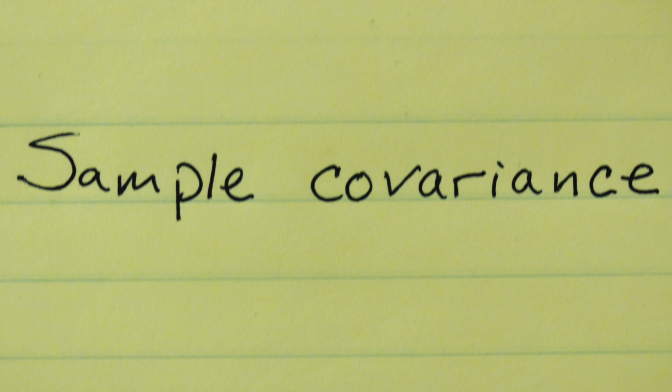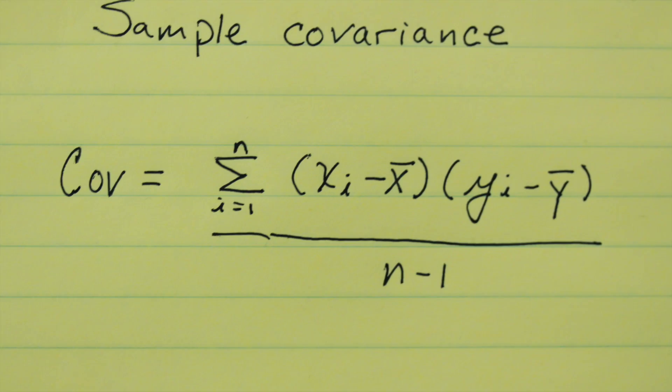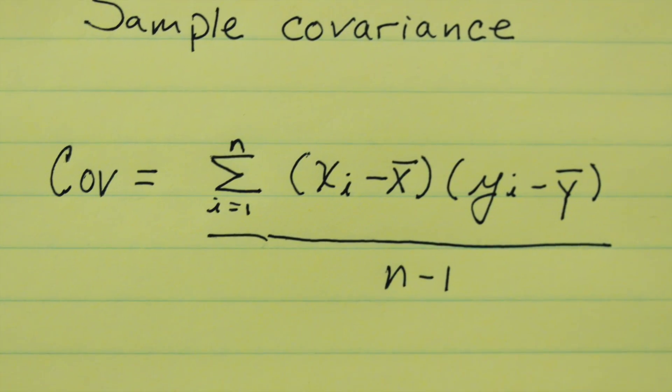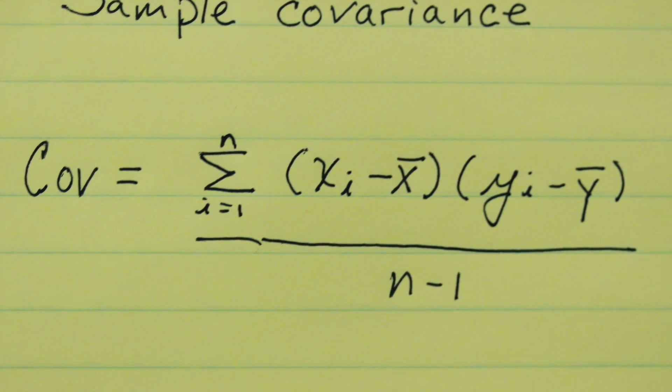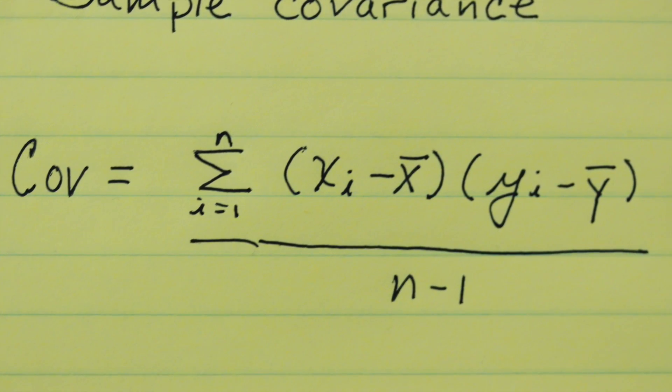Sample covariance. This is one of the measures we can look at to measure relations between variables. So sample covariance, we look at the summation of xi minus x bar times yi minus y bar over n minus 1.